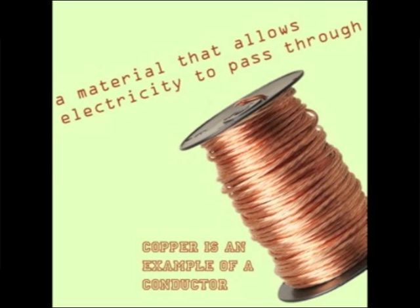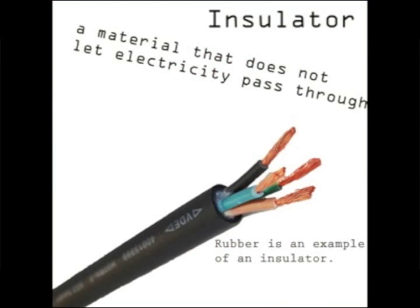In order to make electricity flow, we need a conductor. A conductor is a material that allows electricity to pass through easily. An example of a common conductor is copper — we use copper wire as a conductor in the classroom. The opposite of a conductor is an insulator, which is a material that does not allow electricity to pass through it. A common insulator is rubber; you will often see rubber surrounding copper wire on most of your electronics.